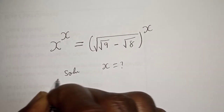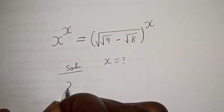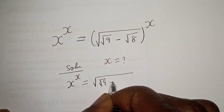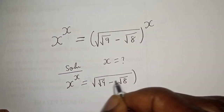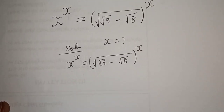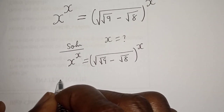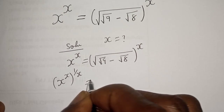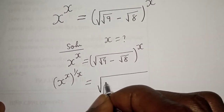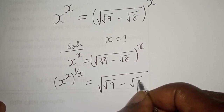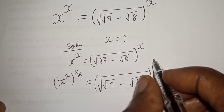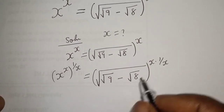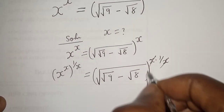s raised to power s is equal to the square root of square root of 9 minus square root of 8, all raised to the power of s. Let's multiply the exponent of both sides by 1 over s. That is: s raised to power s multiplied by 1 over s, is equal to square root of square root of 9 minus square root of 8, raised to the power s multiplied by 1 over s. This will cancel this, and this will cancel this.